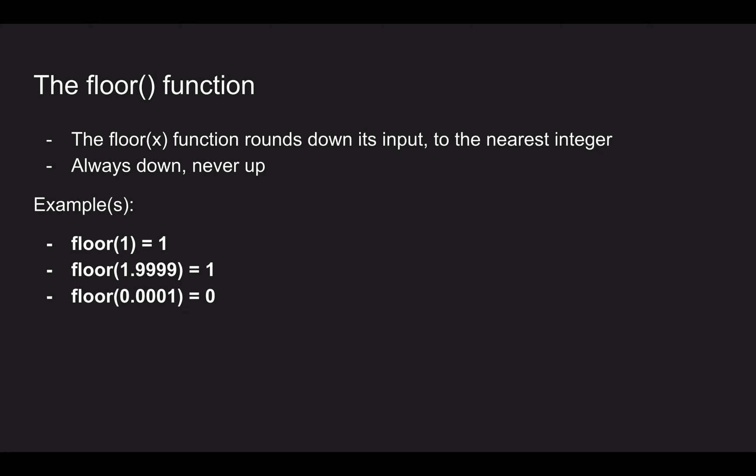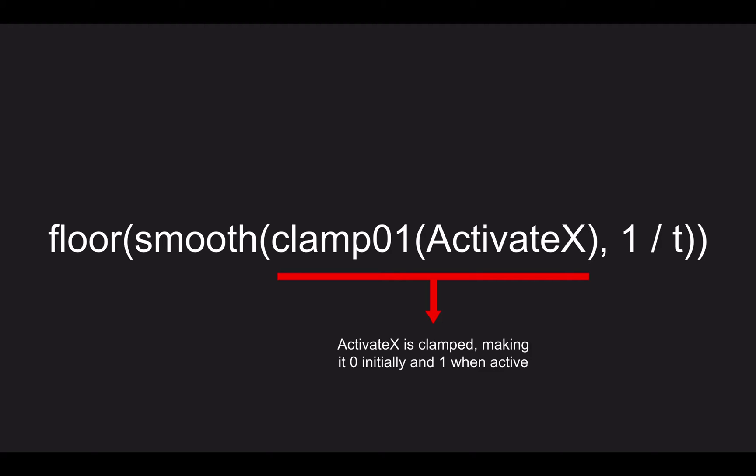The final function used in our particular activation delay code is the floor function. The floor function always rounds down its input to the nearest integer, never up. For example, floor(1) equals 1. Floor(1.9999), no matter how close it comes to the next number, we're just going to chop that decimal place straight off and it equals 1. Floor(0.0001), it's never going to go up, it's going to go straight down and become zero.